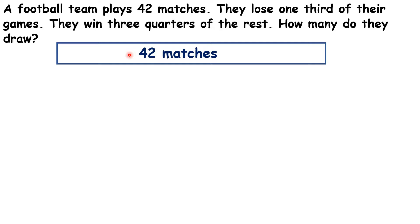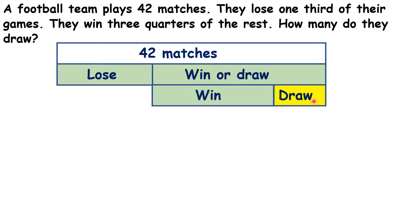So there are 42 matches. One third are lost, which means that the rest, so two thirds, are either won or drawn. Of the rest, three quarters are won, which means that one quarter of the rest are drawn.